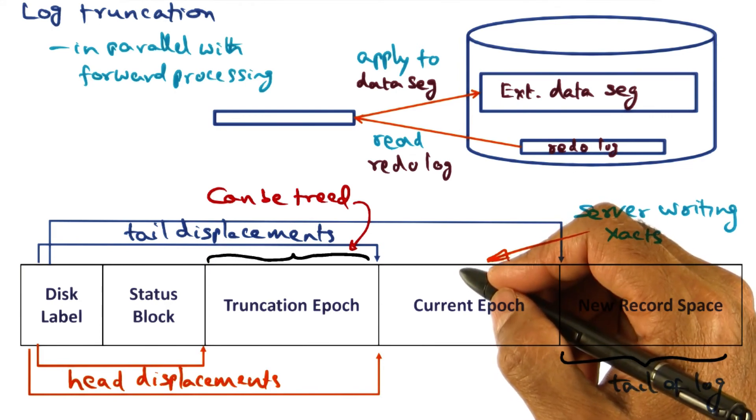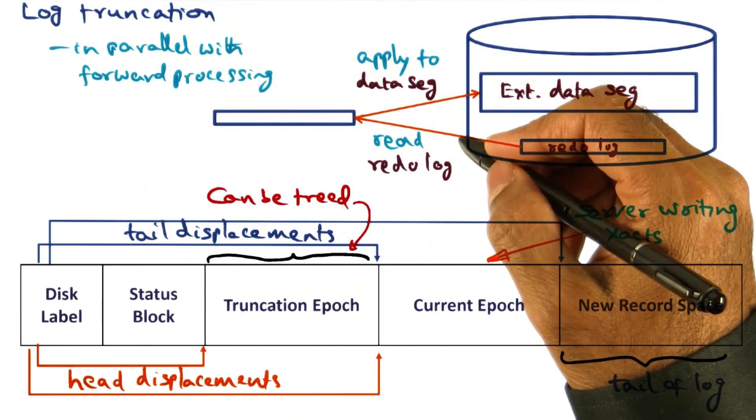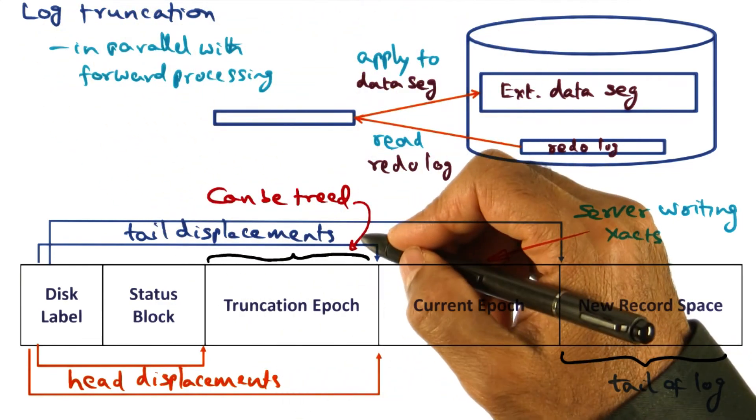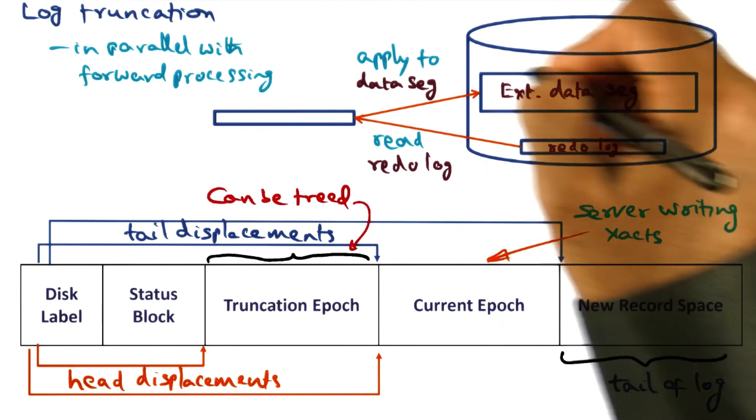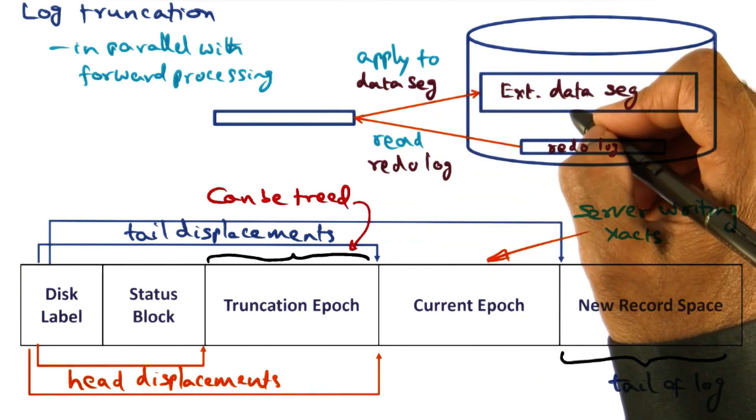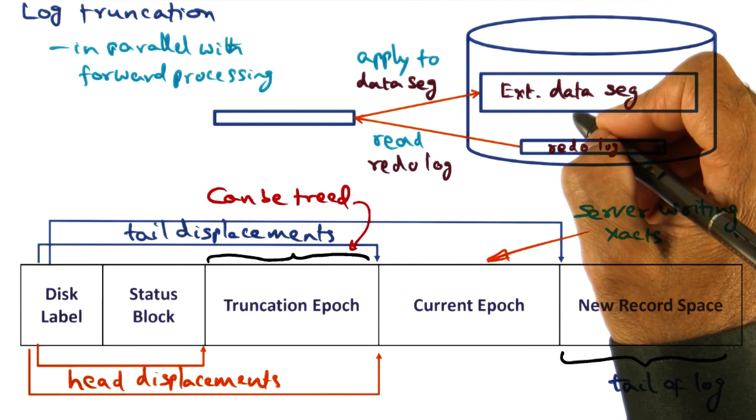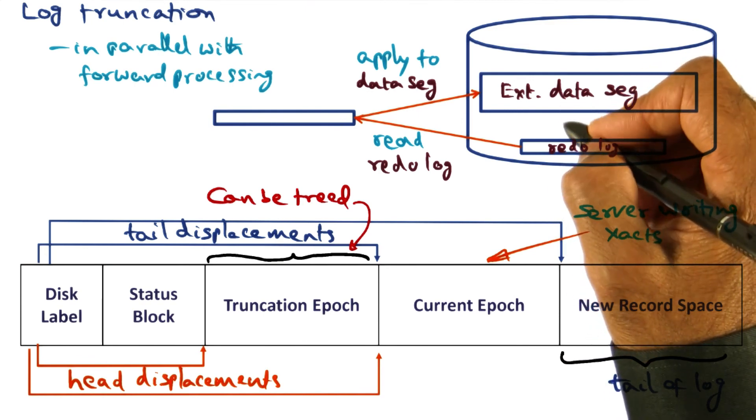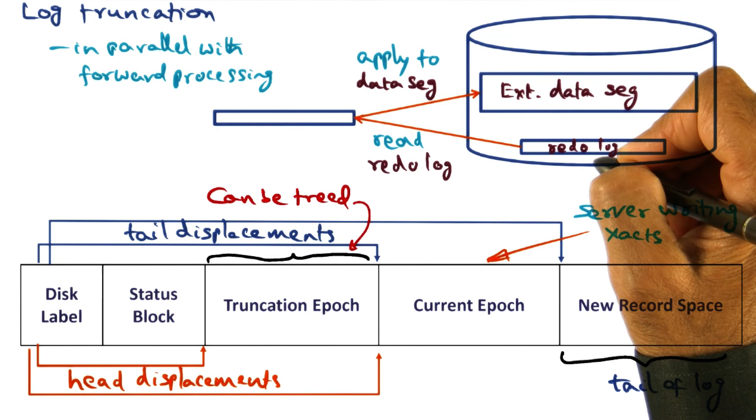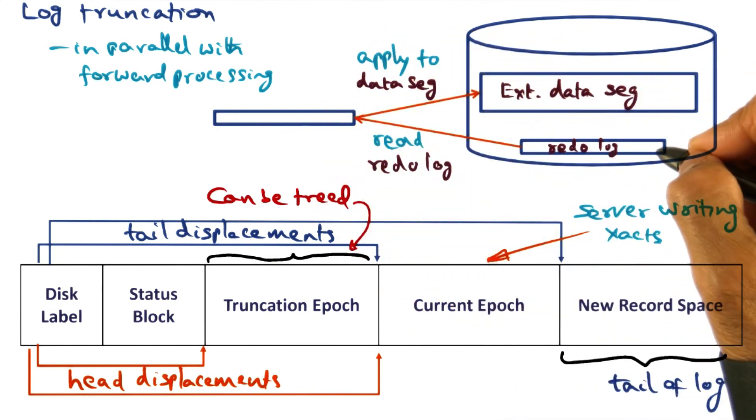Now what I described to you here is one coarse level of log truncation where we are taking the redo logs and applying it. A more fine-grained way of implementing log truncation would be to look at in-memory copy of the log segment also, and trying to make sure that we apply it to the external data segments so that we don't even incur the cost of writing a disk version of the redo log. That is even more complicated, and I welcome you to read details of that in the paper.